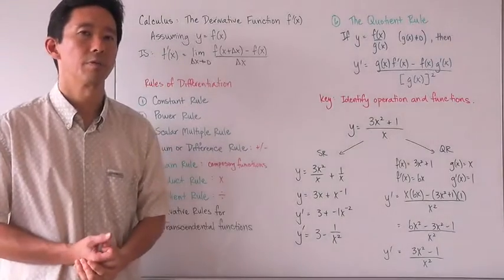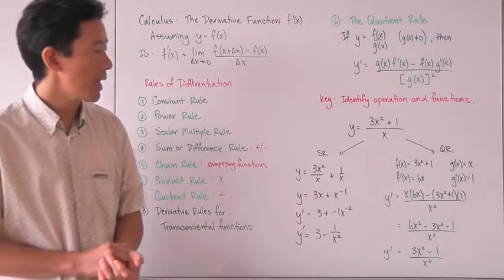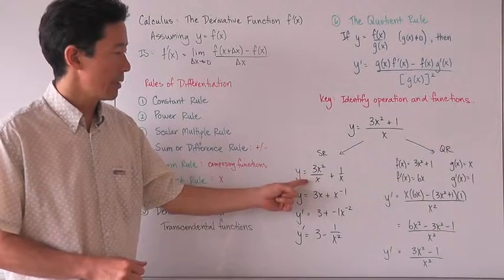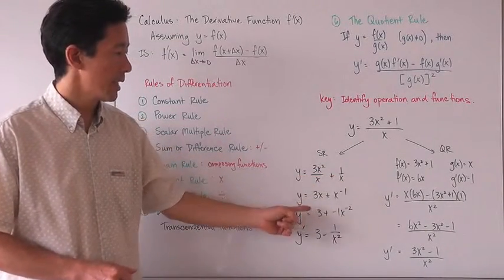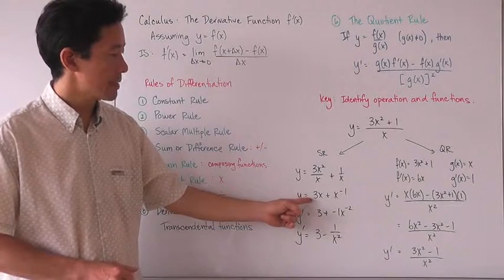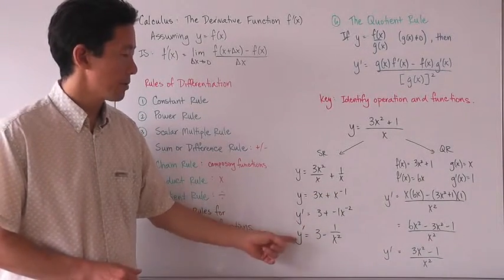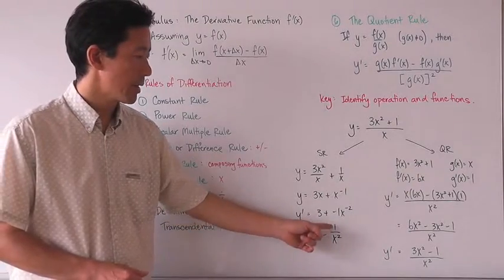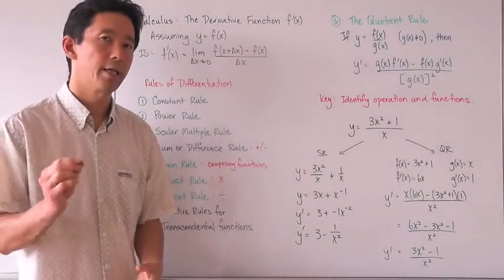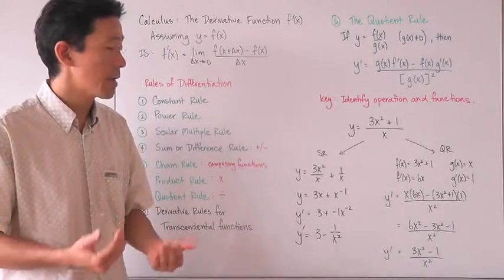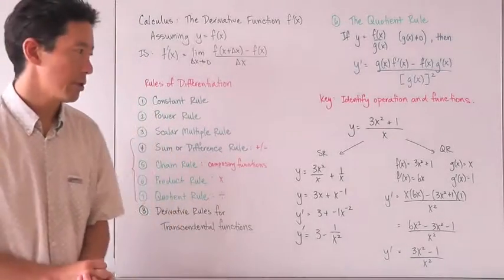Can you use the simple rules of differentiation? In this case you can, because we can rewrite this as 3x squared over x plus 1 over x. That simplifies to 3x plus x to the negative 1. We can use our simple rules of differentiation to come up with 3 minus 1 over x squared. If you can use the simple rules of differentiation, I recommend you do so.